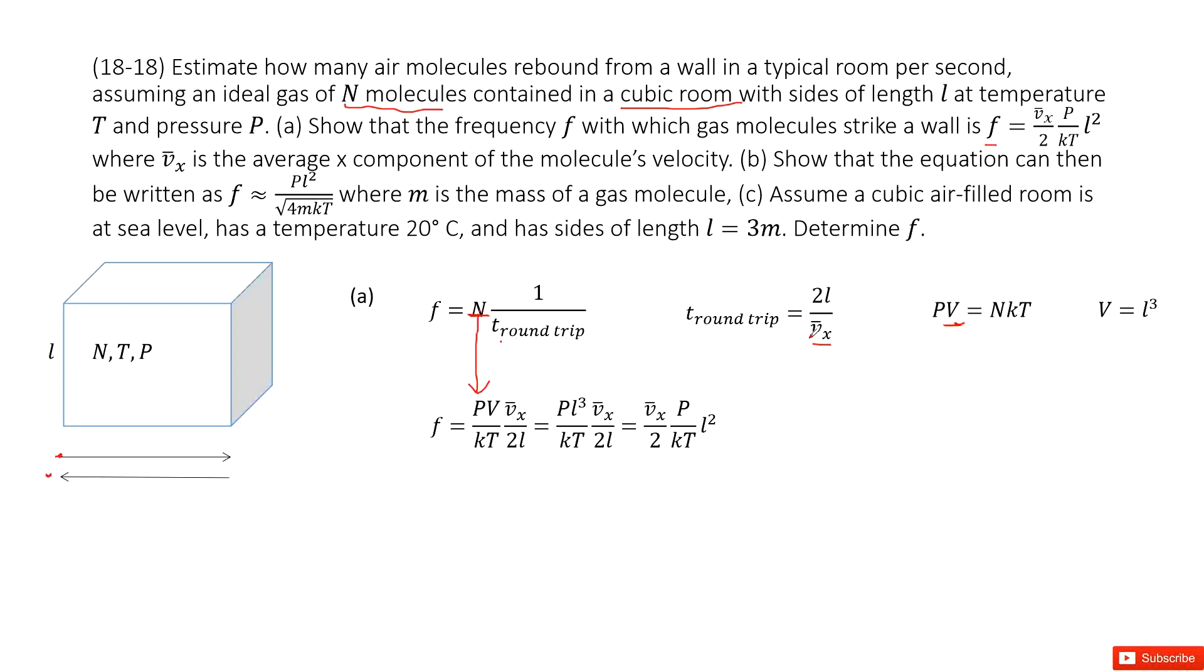The t round trip is 2L divided by vx, so one over t round trip is vx divided by 2L. Next step, we want to prove it looks like this one. It doesn't have V, it is L squared. In this case, we need to replace the V volume with L cubed. So we replace V with L cubed. There is one L, there is L cubed, so cancel one L, we get the answer. Bingo, proved.